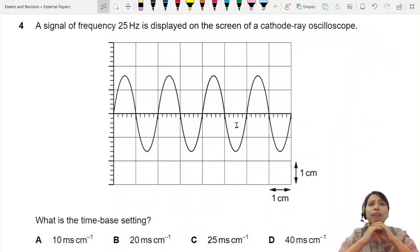A signal of frequency 25 Hz is displayed on the screen of a cathode-ray oscilloscope. What is the time-base setting?